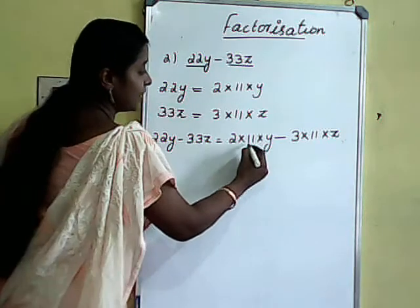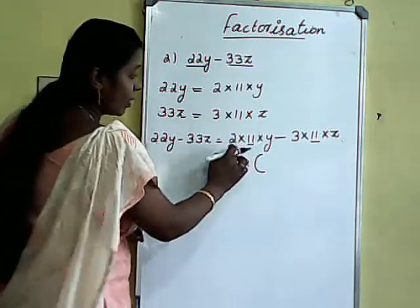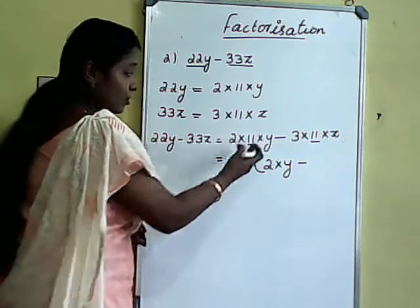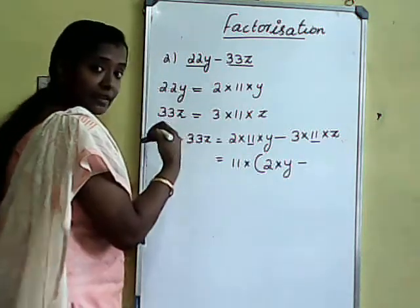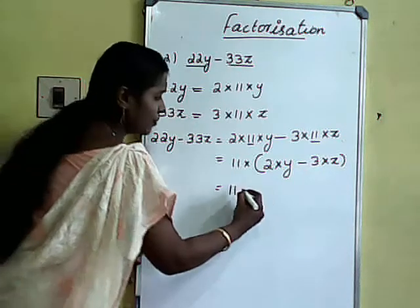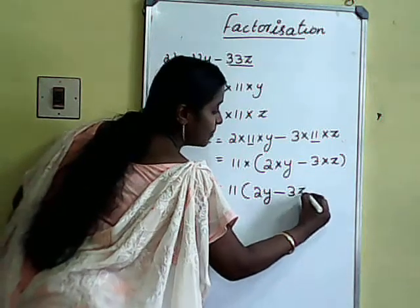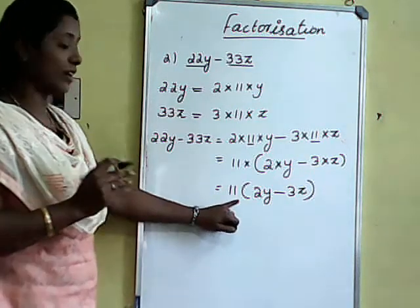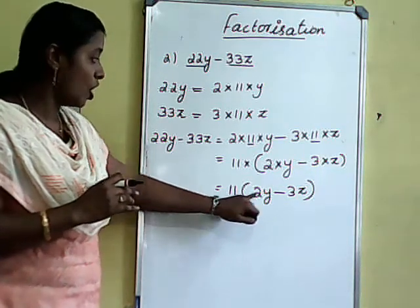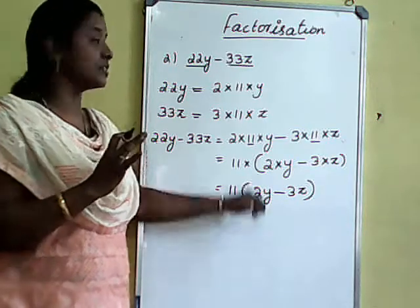What factors are common here? Only 11. We take 11 as common and put it outside the bracket. The remaining terms are: 2 into y minus 3 into z. So we get 11 into (2y minus 3z). So 11 and (2y minus 3z) are the irreducible factors of this expression, and all these are prime factors.